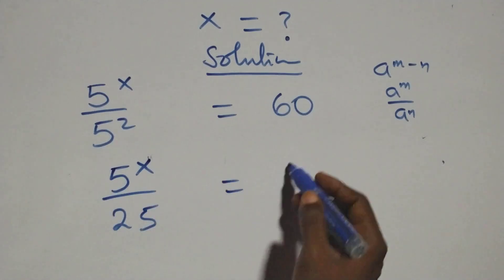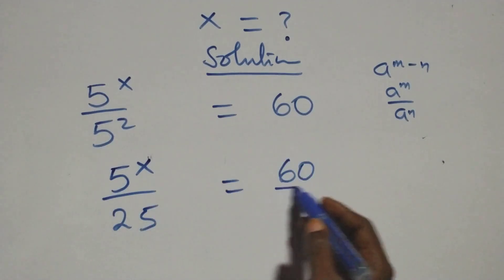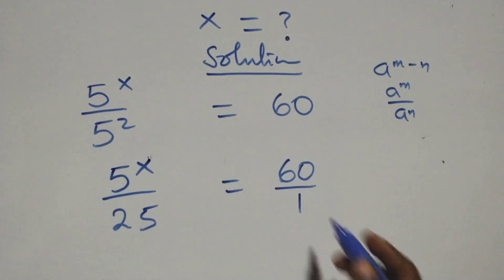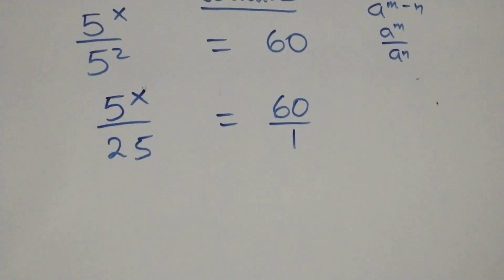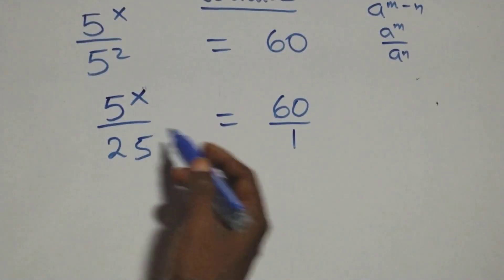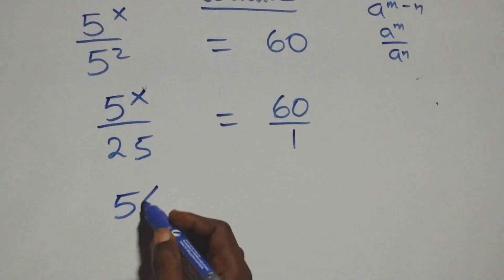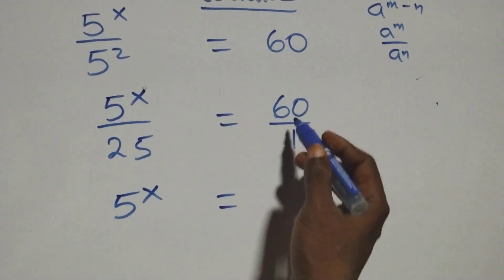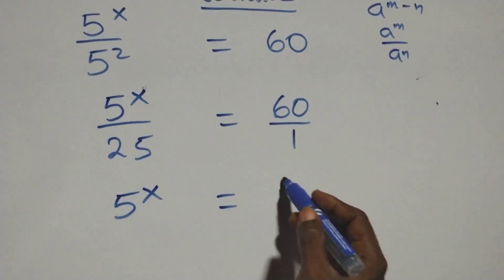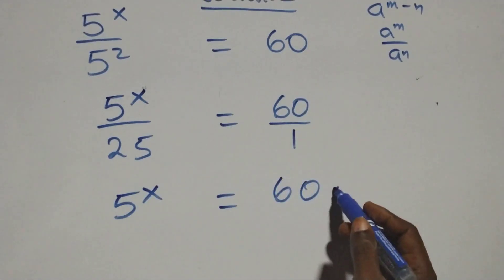This equals 60 over 1. Then the next step, we cross multiply: 5 raised to power x times 1, which is the same as 5 raised to power x, equals 60 times 25.